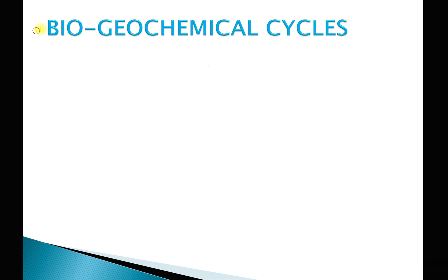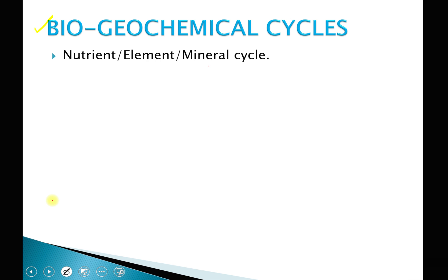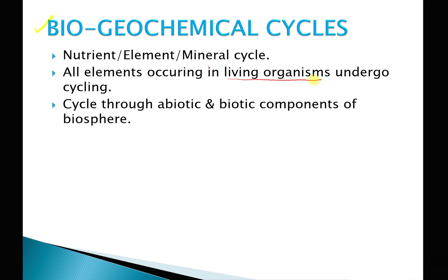These cycles are also called biogeochemical cycles. Other names include the nutrient cycle, element cycle, and mineral cycle. All elements important for life — those present in living organisms such as plants, animals, or microorganisms — undergo cycling. The cycle occurs through the abiotic and biotic components of the biosphere.